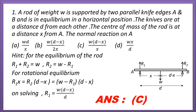For rotational equilibrium: R1·X = R2·(D − X) = (W − R1)·(D − X), where we have replaced R2 by W minus R1. On solving we get R1 equal to W(D − X)/D. So the correct answer is option C.